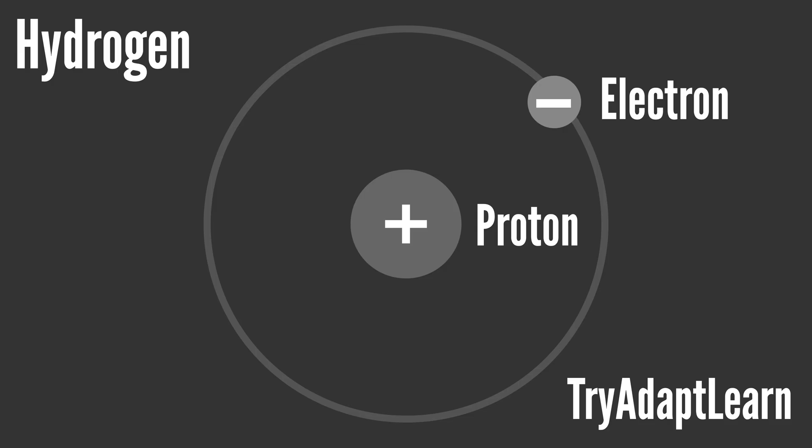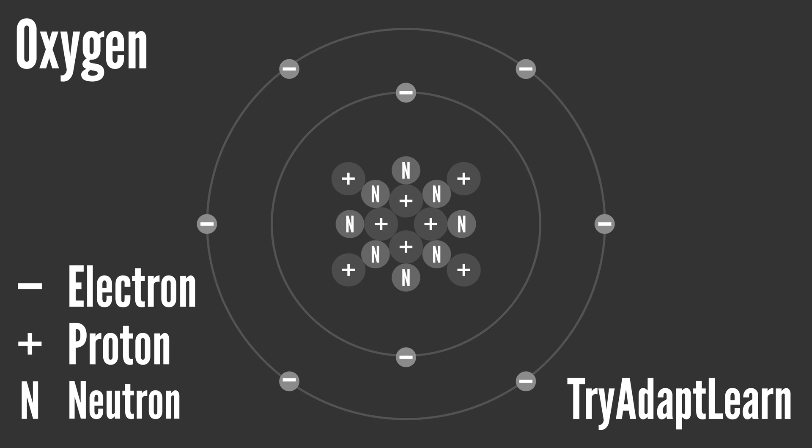And so now that we've talked about atoms, here are a few diagrams of some of the atoms we talked about. The first diagram here you can see is hydrogen. Hydrogen having one electron and one proton. As compared to hydrogen, the next diagram we have is the atom of oxygen. Now oxygen has eight electrons, eight protons, and eight neutrons.